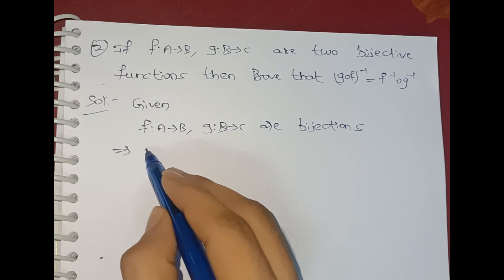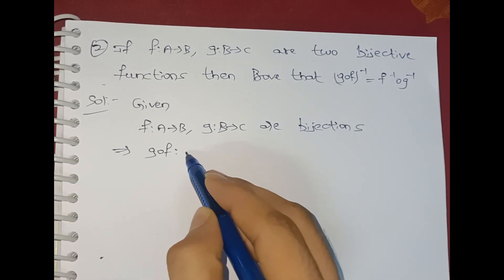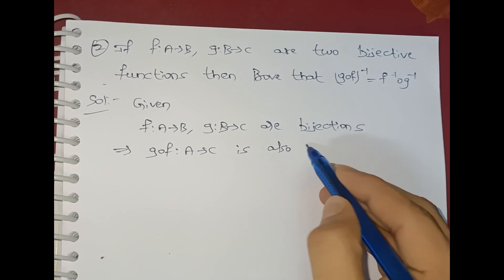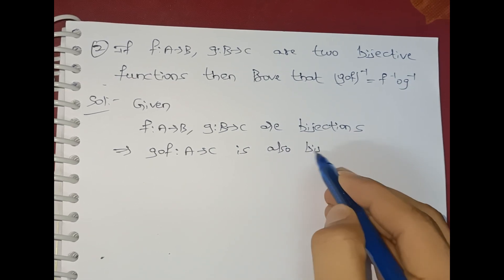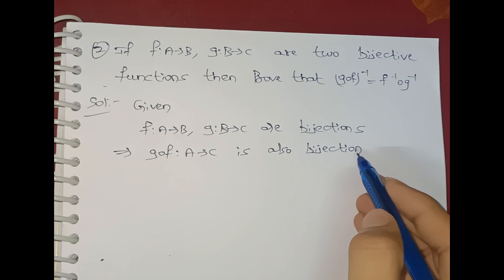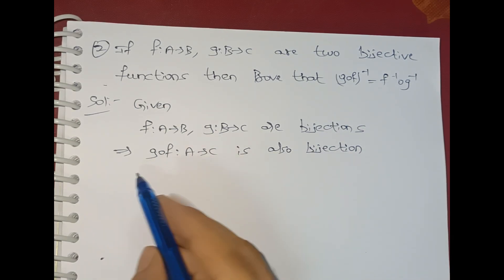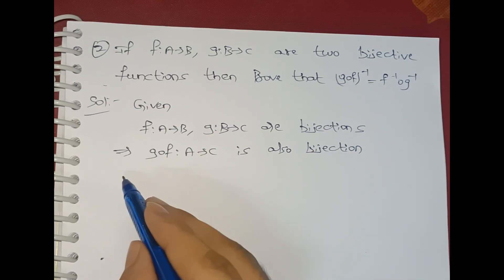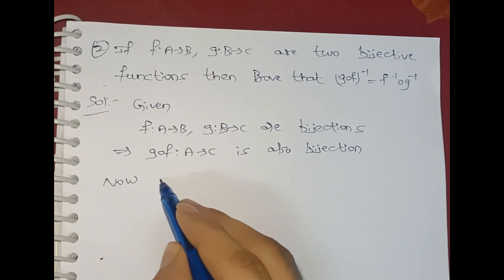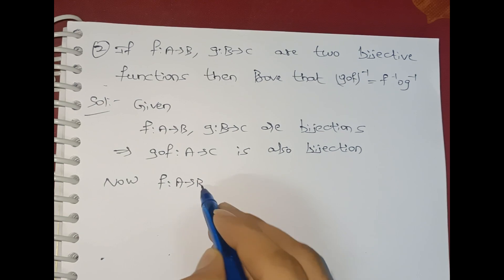That implies g∘f mapping A to C is also a bijection. Now, f mapping A to B is a bijection.